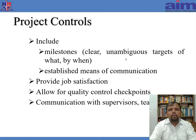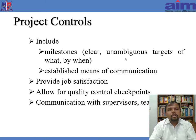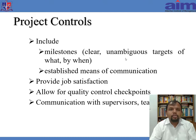The next step is project controls, which includes milestones that have to be very clear. For house construction, the first milestone could be completion of piling, the second completion of the basement, the third completion of the first floor, and the next completion of the second floor — each with a clear completion date. Provide job satisfaction, because if team members are not satisfied, they may quit and people are a major resource of a project. Allow for quality control checkpoints and communicate with the team and supervisors throughout the project, as communication is the utmost important aspect of project management.